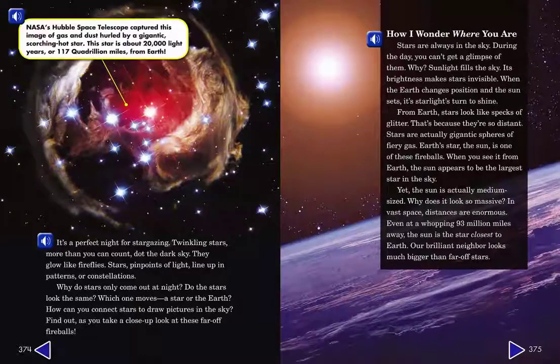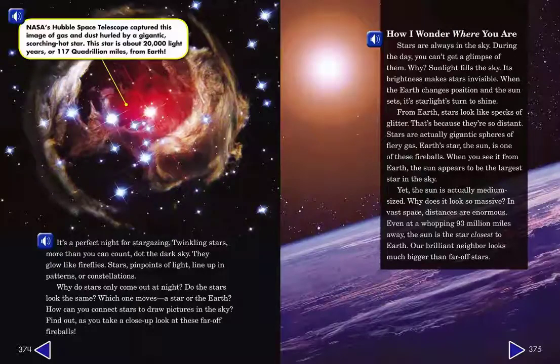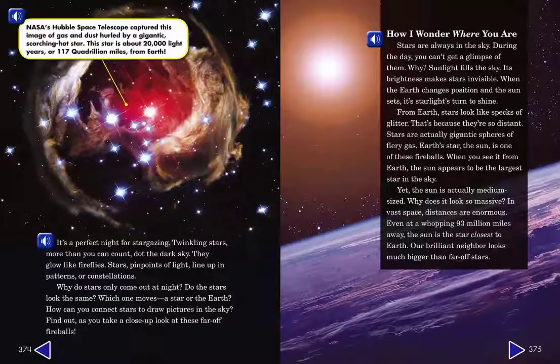From earth, stars look like specks of glitter. That's because they're so distant. Stars are actually gigantic spheres of fiery gas. Earth's star, the sun, is one of these fireballs.